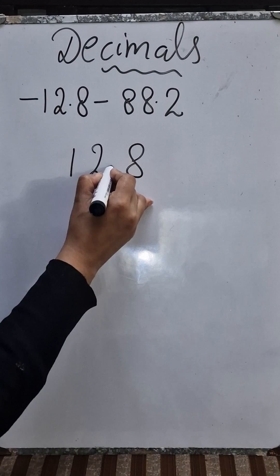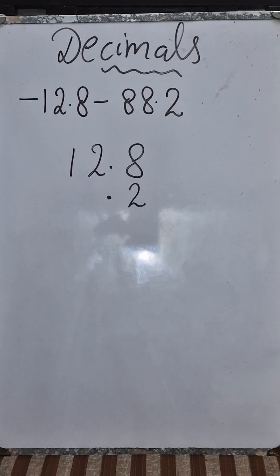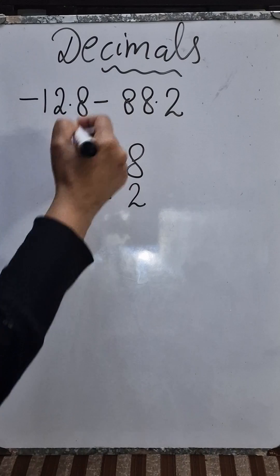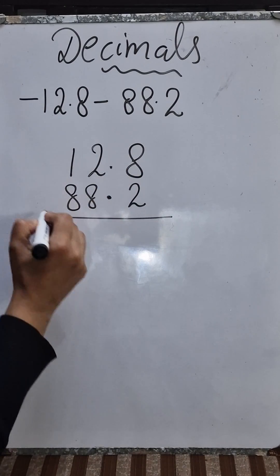Then before the decimal it's 88. 88 will come here like this. Now you are going to add.